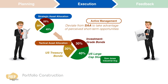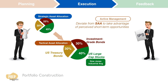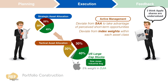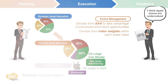You can take the active management further by deviating from the index weights within each asset class. For example, if the weight of Apple shares in the Dow Jones is currently 5% and your analysis shows that Apple stock is undervalued, you may choose to overweight on Apple. This is known as security selection.